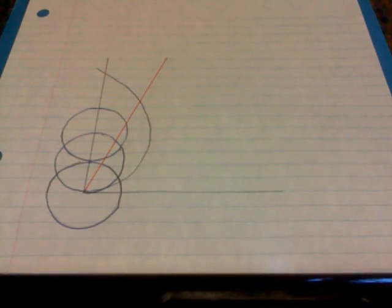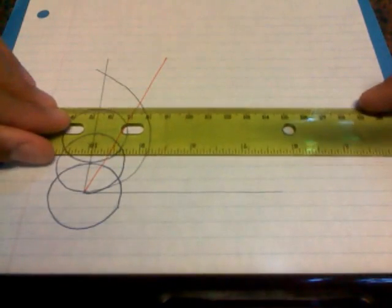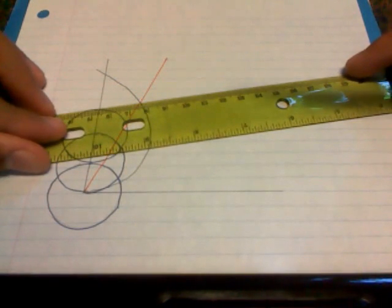What we're going to do next is we're going to draw a parallel line, or we're going to draw a line from the top of the circle to where our first line intersects the spiral of Archimedes.